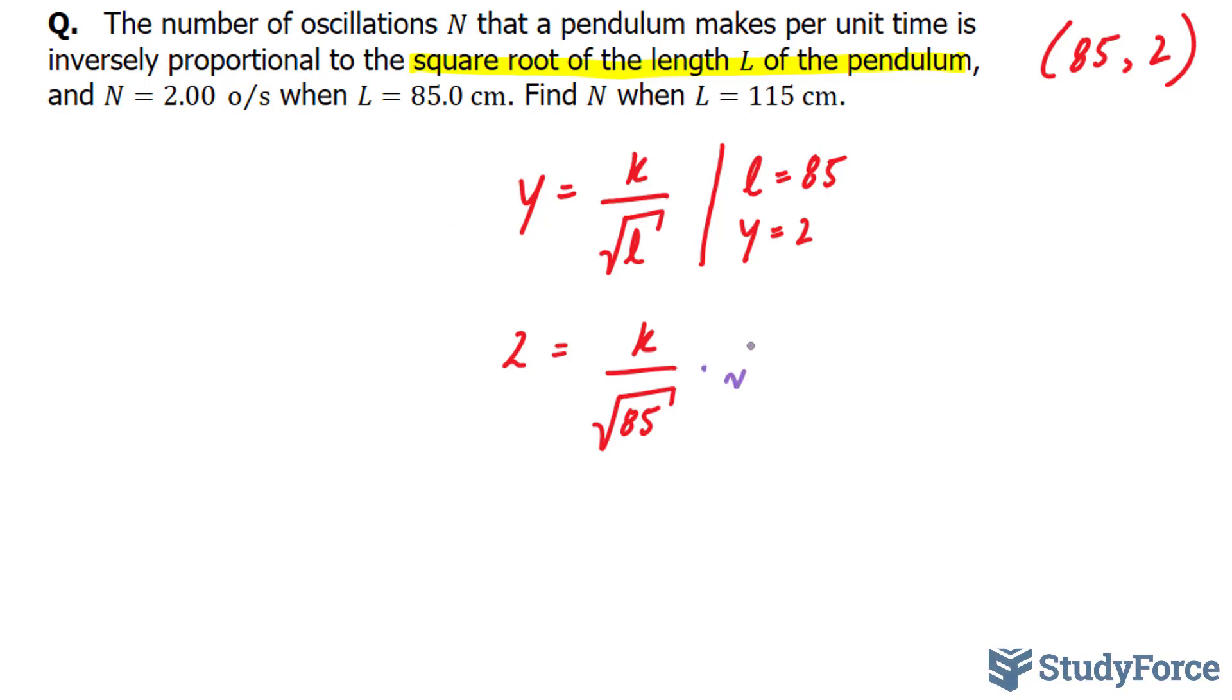Multiplying both sides by the square root of 85, this eliminates the square root of 85 on the right side, and on the left side we have the square root of 85 times 2.